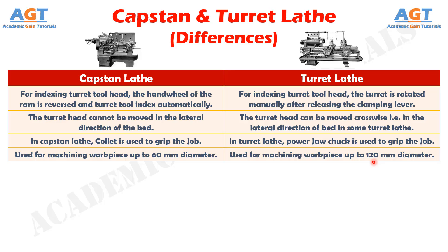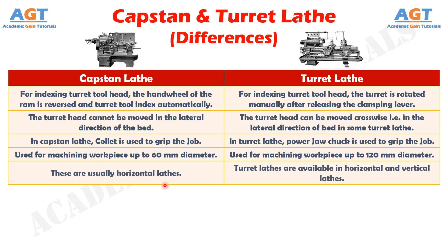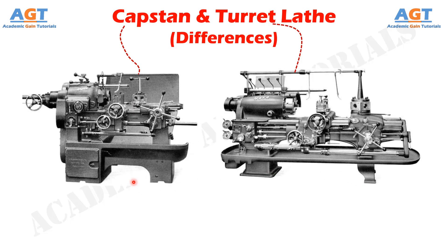And finally, capstan lathes are usually horizontal lathes, whereas turret lathes are available in both horizontal and vertical configurations. Capstan and turret lathes are advancements of the engine lathe and center lathe, wherein the tailstock is replaced by a hexagonal turret tool head having six different tools in the turret, where the turret tool is rotated in each operation according to process requirement.